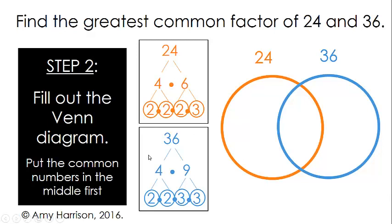We've got 2s in common, so we cross off one set of 2s and go ahead and put it in the middle. We've got another set of 2s, so we can cross those off and put that one in the middle as well.